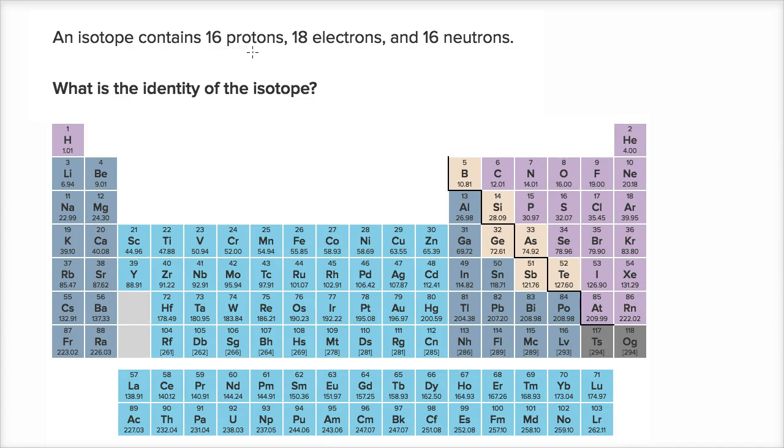An isotope contains 16 protons, 18 electrons, and 16 neutrons. What is the identity of the isotope?